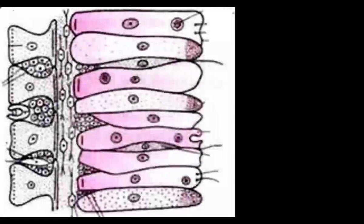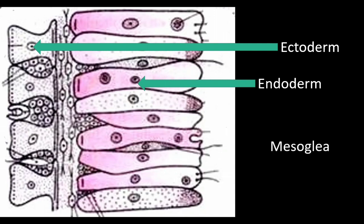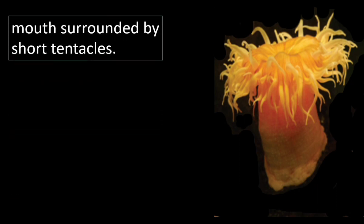This diagram shows the two layers in the body wall — the outer ectoderm and inner endoderm, with mesoglia in between. Mesoglia is not made up of cells. Animals belonging to the phylum Coelenterata have a mouth at the center, and around the mouth, finger-like structures called tentacles are seen.